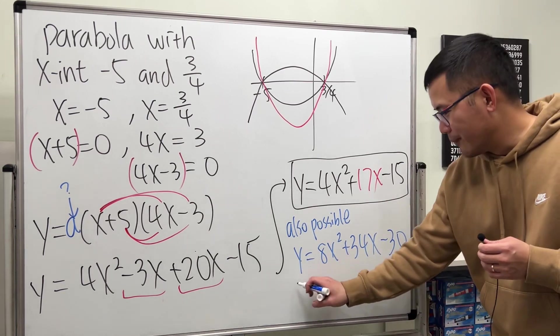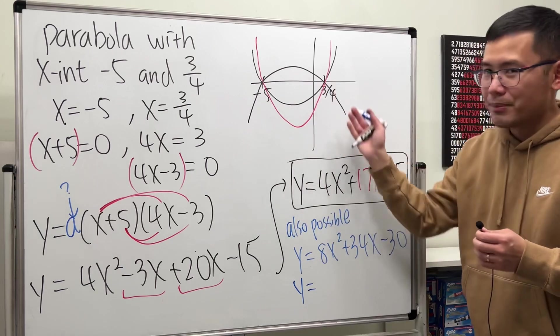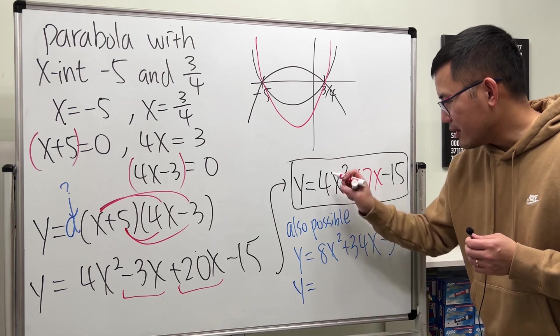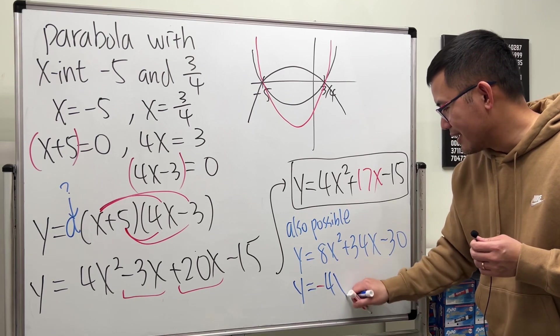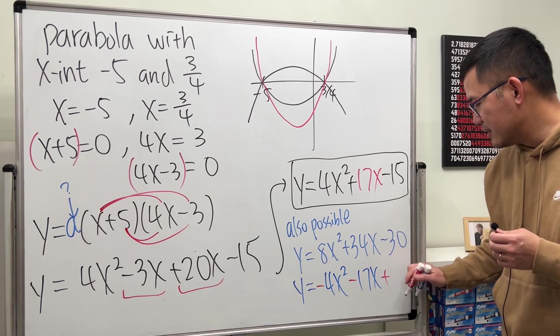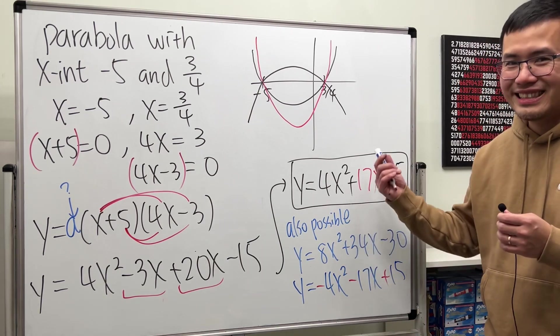And of course, if you want to have an open down parabola, you can actually make everything negative as well. So, I will just say negative 4x squared minus 17x plus 15. But anyway, that's it.